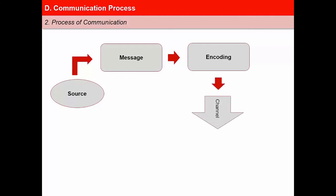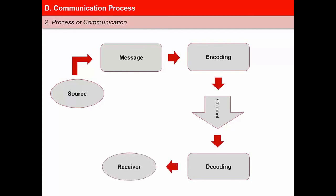Fourth is channel. A message is conveyed through a channel, which can be verbal — such as a telephone call — or written, such as letters or emails. Fifth is decoding: the step where the information gets received, interpreted, and understood in a certain way at its destination. Sixth is the receiver — the individual or individuals to whom the message is sent. Seventh is feedback. When a message is being sent and received, the receiver is likely to send feedback in the form of verbal and non-verbal messages to the sender.